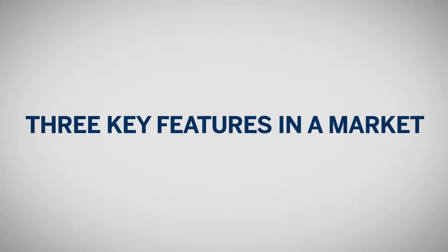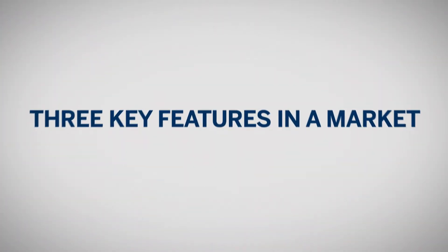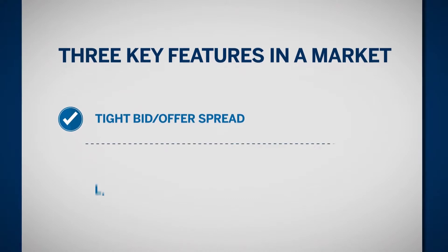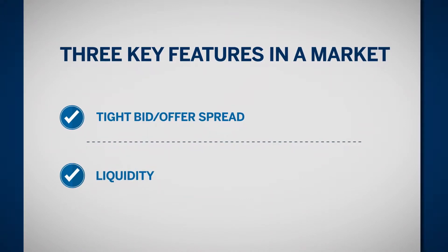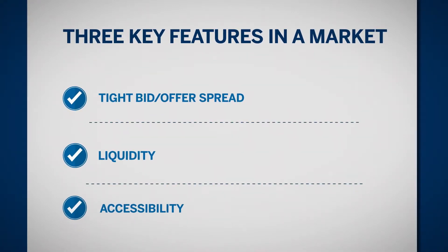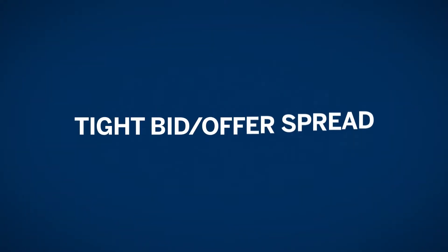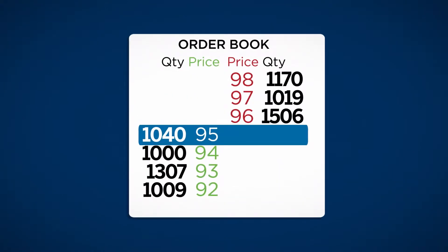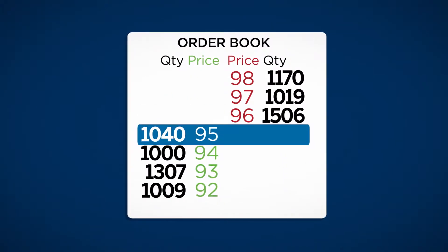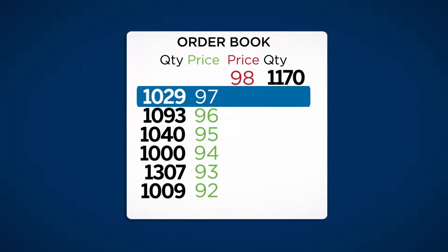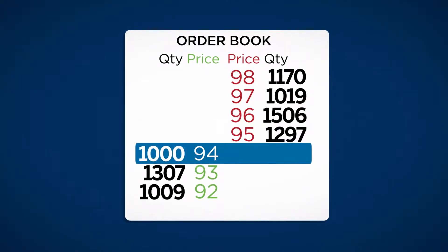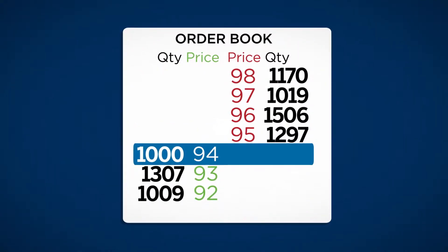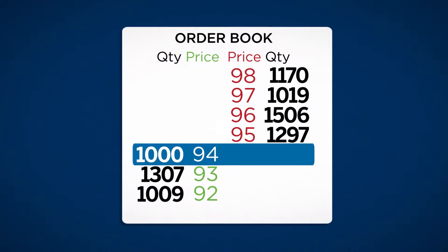Let's look at three key features in a market: tight or close bid-offer spread, liquidity, and accessibility. First, a tight bid-offer spread lets you buy or sell at a reasonable price whenever you want to make a trade. In the futures markets, a reasonable price means one that is close to the last trading price.